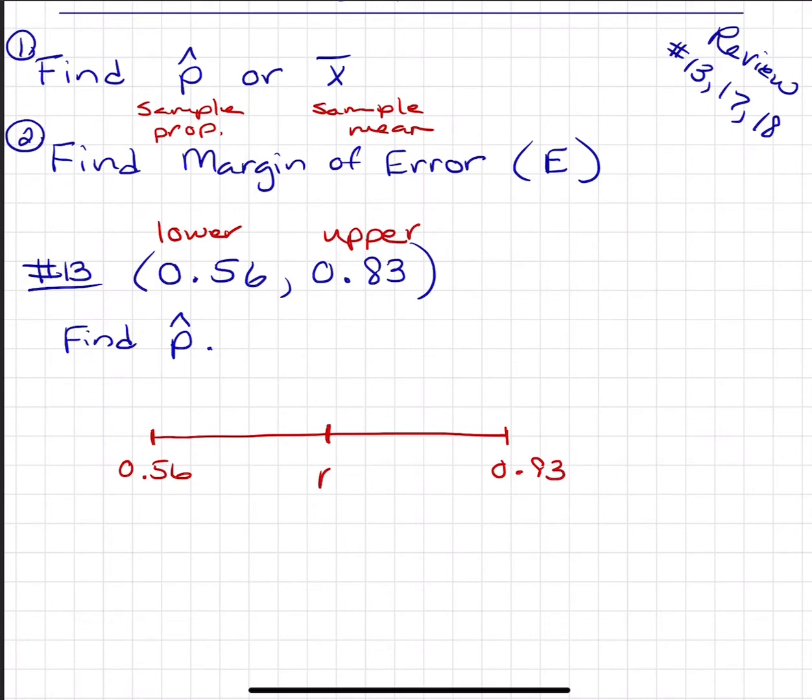P hat is located right between those. What we're doing when we're doing confidence intervals is we're using your P hat to estimate the population proportion.